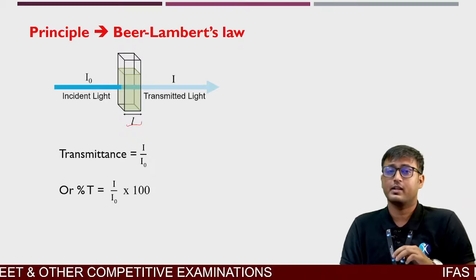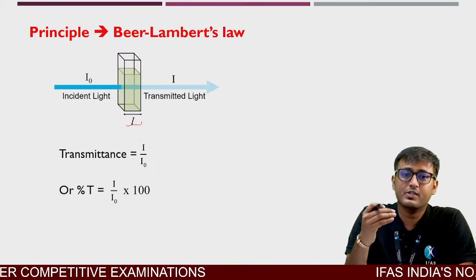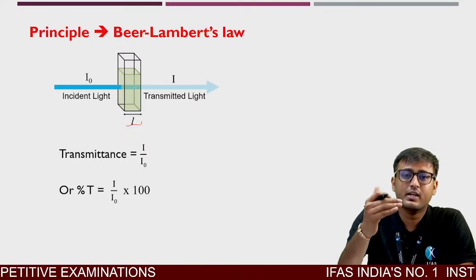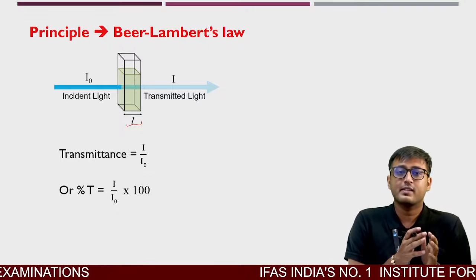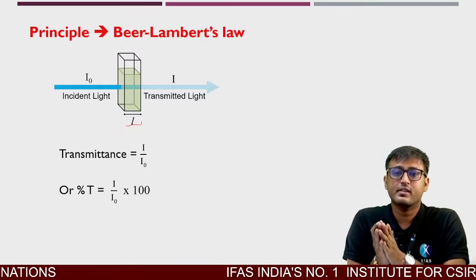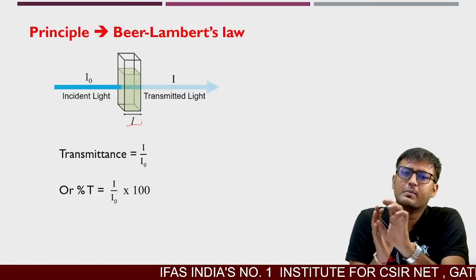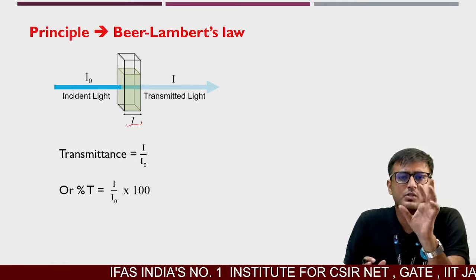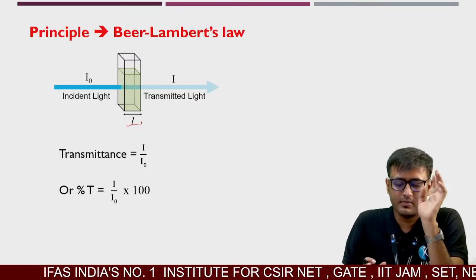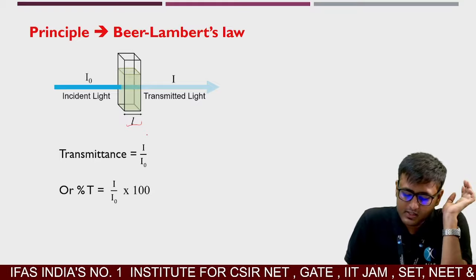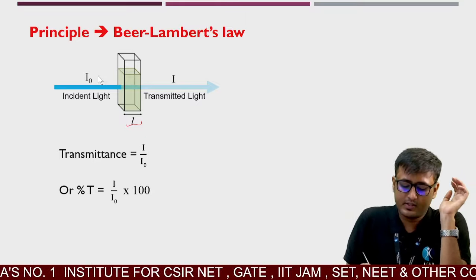Transmittance matlab woh light jo ek dusri side se pass ho rahi hai aur detector tak pahunch rahi hai. Obviously, incident light jitni hi intensity transmitted light ki nahi hogi — kuch portion absorb hogi, phir bhi woh ek-do percent bhi absorb hogi, kuch particular intensity absorb hogi due to the presence of something. So, transmittance is equal to I/I₀, aur percent transmittance is I/I₀ × 100.